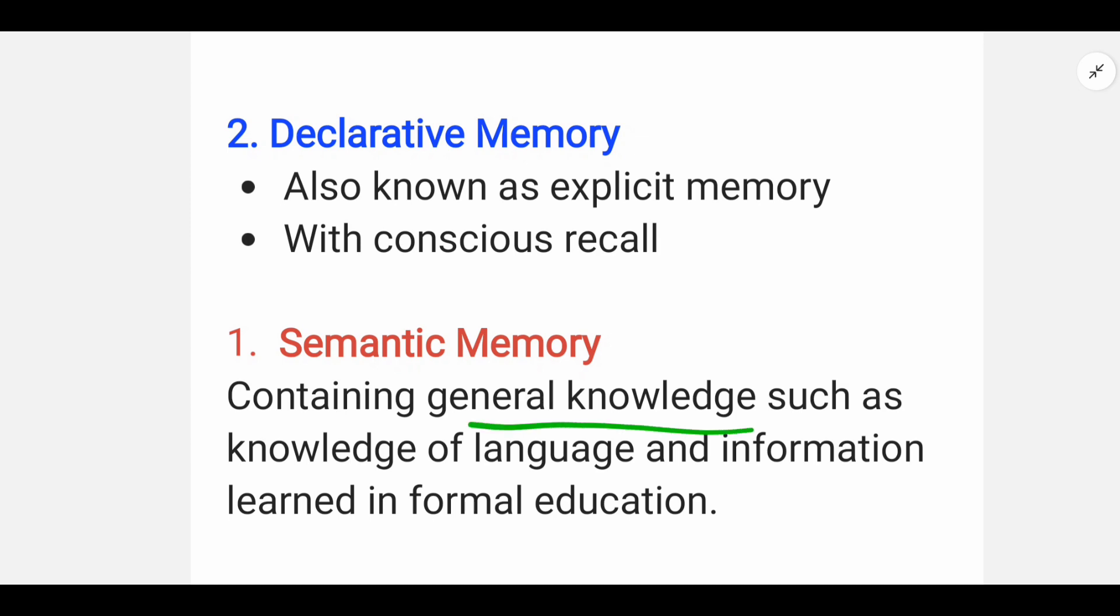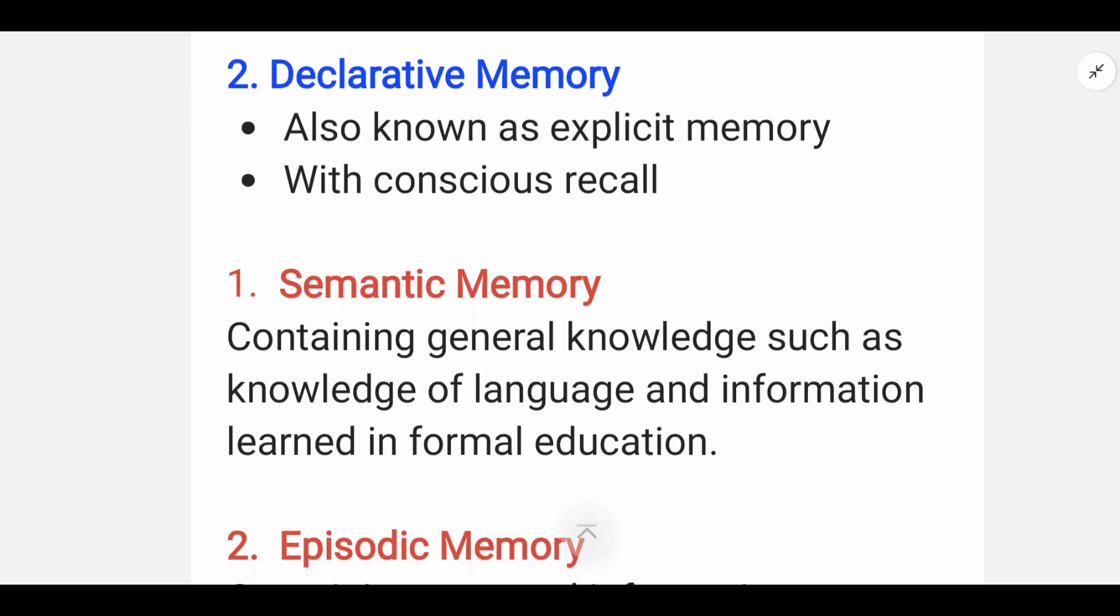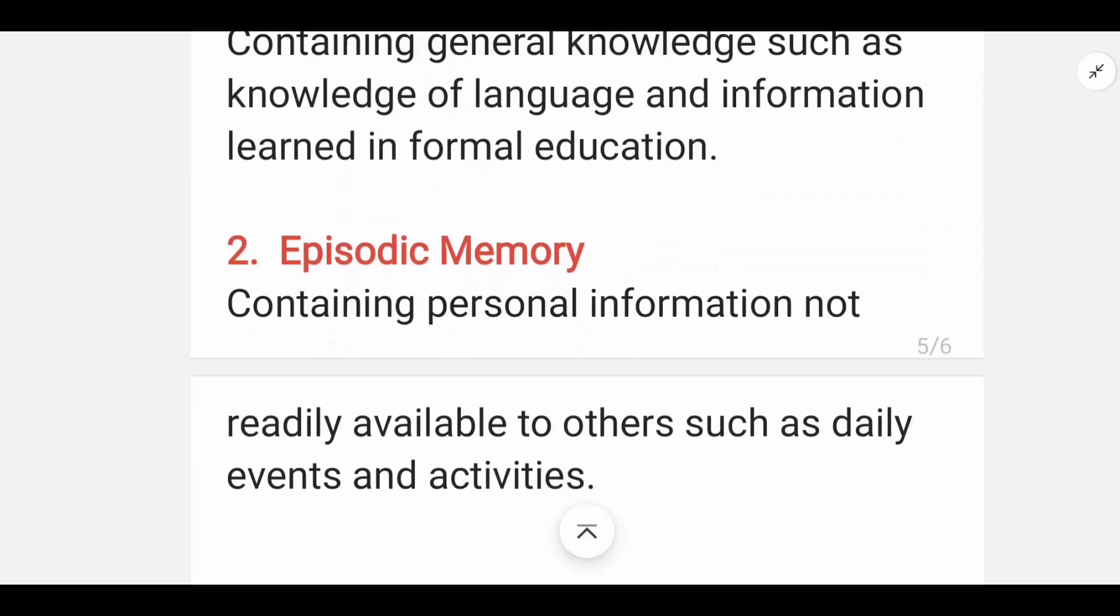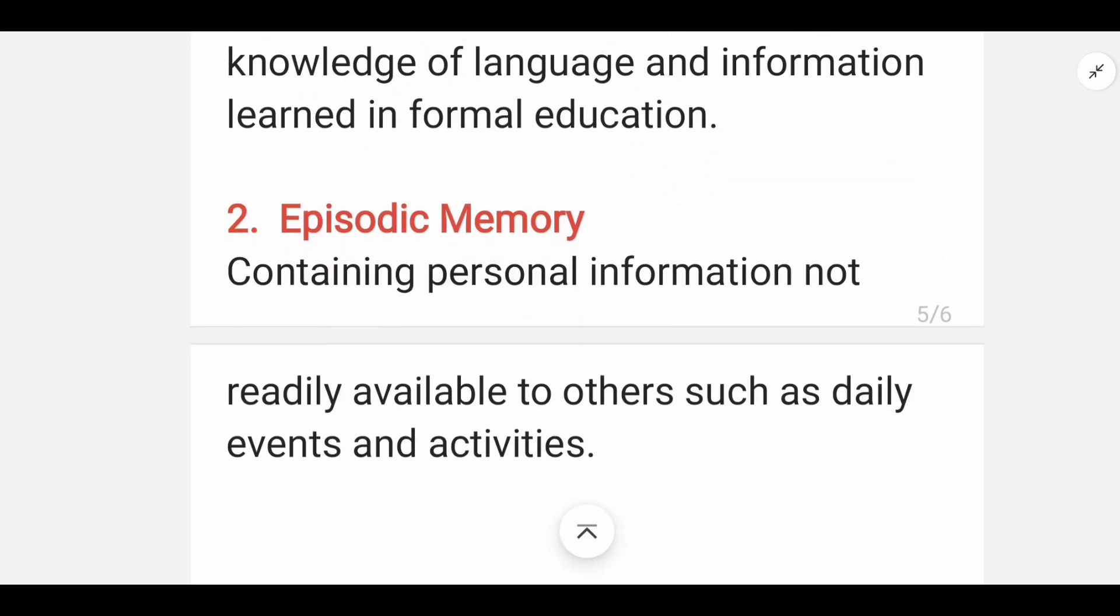Semantic memory contains general knowledge such as knowledge of language and information learned in formal education. Which means we need to learn certain things, then it should be our semantic memory. Then we also have episodic memory, which means personal information containing personal information not readily available to others, such as daily events and activities.